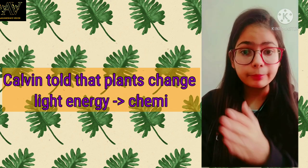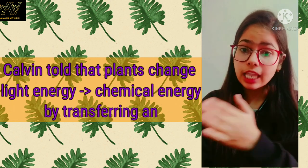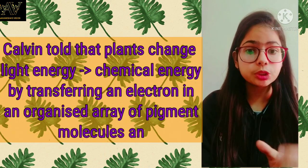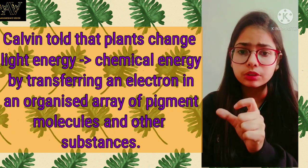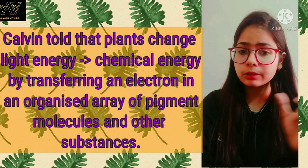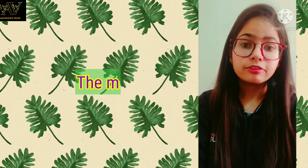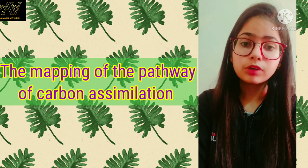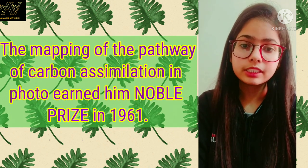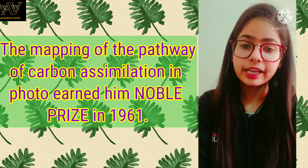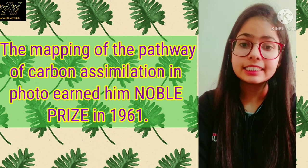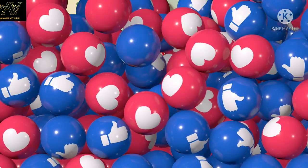Calvin explained that plants changed light energy into chemical energy by transferring an electron from an array of pigment molecules and other substances. Finally, the mapping of the pathway of carbon assimilation in photosynthesis earned him a Nobel Prize in 1961. This was all about Melvin Calvin.